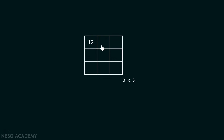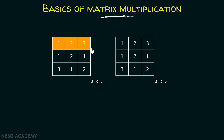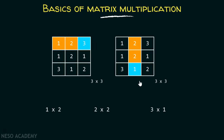In order to obtain the second element, that is, the element at the next particular cell, we first have to identify the location of this cell. We can see that the location of this cell is first row and second column. Therefore, we will take the first row from this matrix and the second column from this matrix. Then we will take the first element from this row and the first element from this column and multiply them. Then the second elements from each, and multiply them. Finally, we will take the third elements and multiply them, then add them all to obtain the final result.